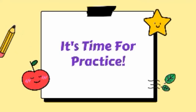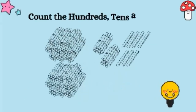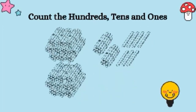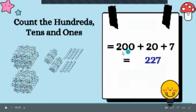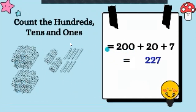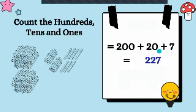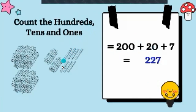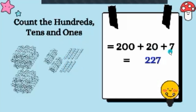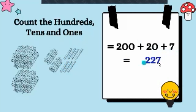It's time for practice! Count the hundreds, tens, and ones. There are one and two — two bundles of hundreds, that means two hundreds. One and two — two bundles of tens, which can be written as twenty. And one, two, three, four, five, six, seven — seven ones, written as just seven. So the total number is two hundred and twenty-seven.